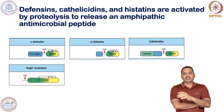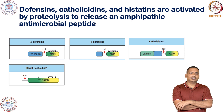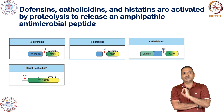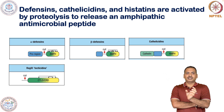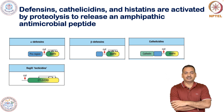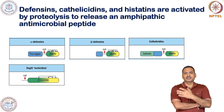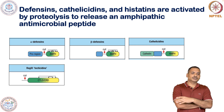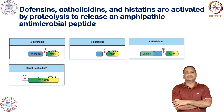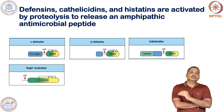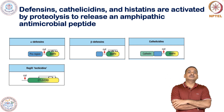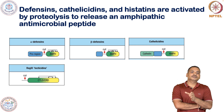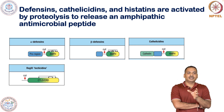The pro region is shorter in the case of beta defensin, and upon cleavage it generates the amphipathic active beta defensin. In the case of cathelicidin, there is a cathelicidin domain and a pro region which is cleaved to generate the amphipathic active cathelicidin peptide. This is also true for LL-37 or lacticidine protein.